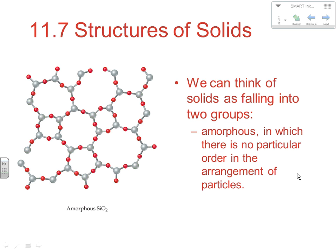Think about the consequences of this with what we've been talking about in this chapter — something like melting point, boiling point, or intermolecular force. If the arrangements aren't ordered, then the intermolecular forces won't be constant and ordered, and that's going to have an effect on properties like melting point.